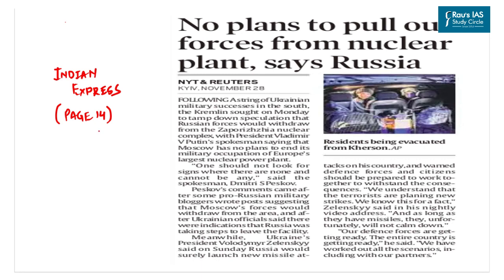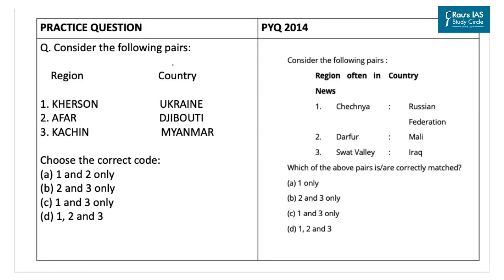The last question of the day from The Indian Express talks about locations in the news, particularly Kherson as part of the Russia-Ukraine war. UPSC has previously asked questions about regions in the news and the countries they are located in, including a 2014 question about Darfur, Swat Valley, and Chechnya. The practice question presents pairs of regions and associated countries. The first pair, Kherson matched with Ukraine, is correctly matched — Kherson is a port city of Ukraine located on the Black Sea and on the Dnieper river, home to a major shipbuilding industry and a regional economic center.